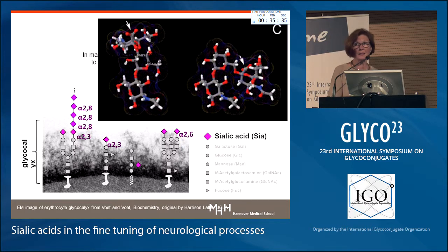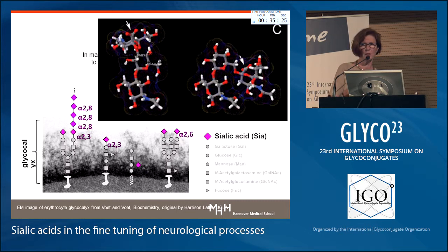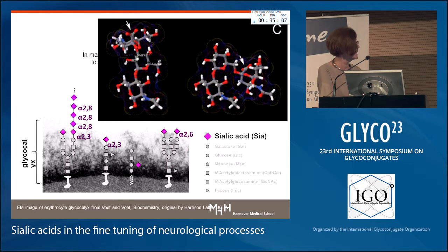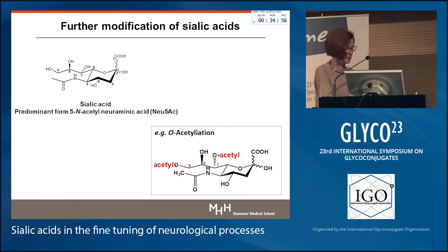It matters which way a sialic acid is linked to a penultimate sugar. When you have sialic acid in an alpha 2-3 linkage to the penultimate sugar, as shown here, you have a stretched configuration; in alpha 2-6 linkage you have a completely different structure. So it makes a lot of difference whether you have sialic acid added in alpha 2-3, alpha 2-6, or alpha 2-8 linkage. Unfortunately I don't have such a nice slide for the alpha 2-8 linkage.